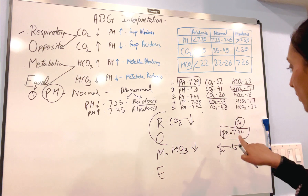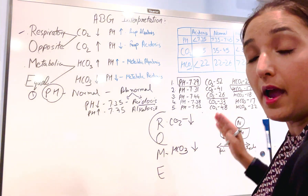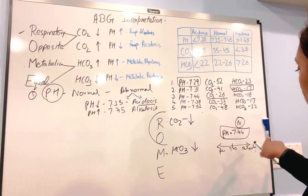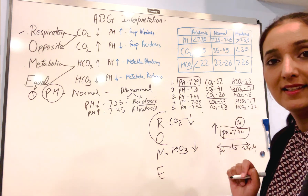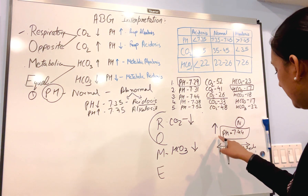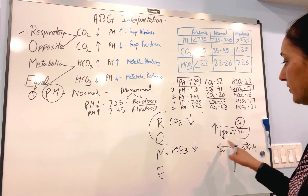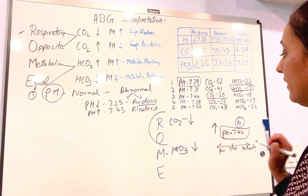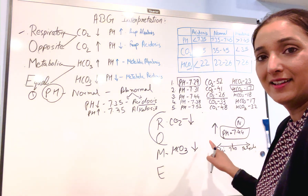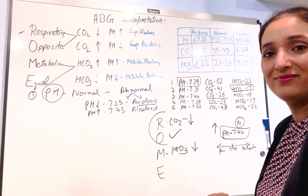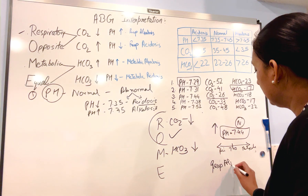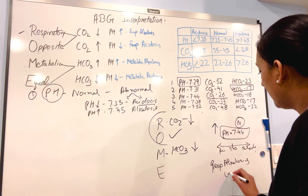pH 7.45 — is it going towards alkalosis? Because it's higher than 7.40, that means towards alkalosis, so pH is going high. Now look at carbon dioxide: carbon dioxide is going down and pH is going high — they are in opposite direction. Opposite direction means this is respiratory alkalosis, compensated.